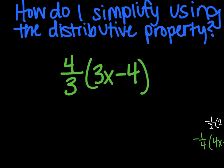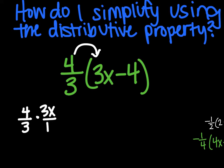We'll start with 4/3 being multiplied by (3x − 4). What you'll want to do is still feed the birds — don't freak out because of the fractions. So you're going to feed that bird, and when you do, you'll step off to the side and do 4/3 times 3x over 1.